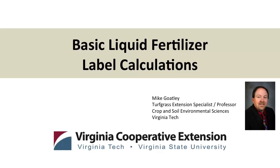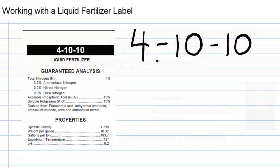Now let's do some calculations reviewing a fertilizer label for a liquid material. This particular product is a 4-10-10, and you see in its guaranteed analysis how the nitrogen is broken up. Everything in this product is going to be water-soluble.